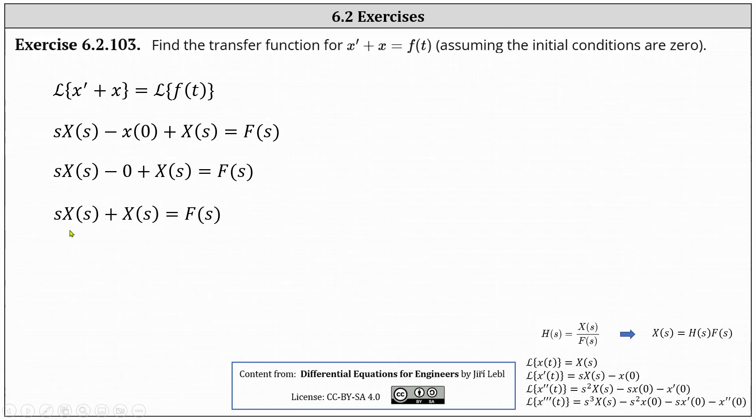The next step is to solve for big X of s. To do this, we factor big X of s from the left, which gives us big X of s times the quantity s plus one equals big F of s, and then we divide both sides by the quantity s plus one.